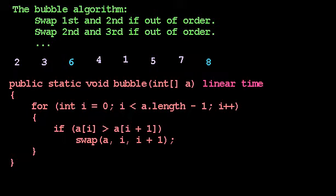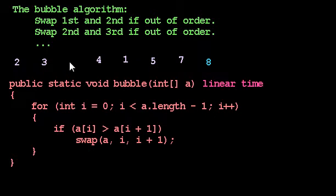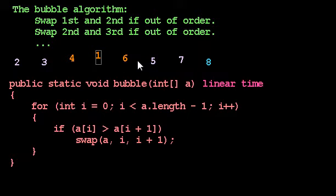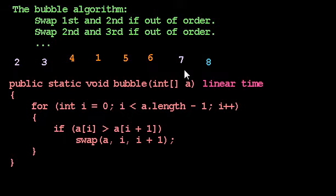Suppose we run bubble again. I compare the first and second — two and three are already in order, so I do not swap them. I compare three and six — they're in order, no swap. But six and four are out of order, so I swap them. Now six and one are out of order, so I'll swap those. Six and five are out of order, so we swap the five and the six. Six and seven are in order, no swapping. Seven and eight are in order. And now we've run bubble a second time.